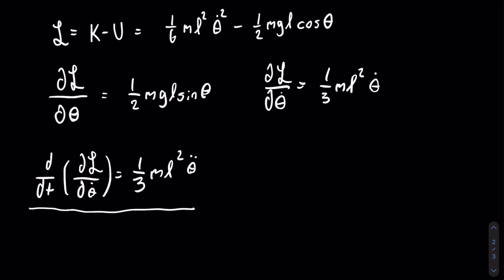Here we have the two things that we need to input into our equation. We equate the two, and we get that one-half mgL sine of theta is equal to one-third mL squared theta double dot.